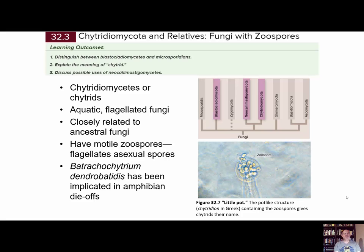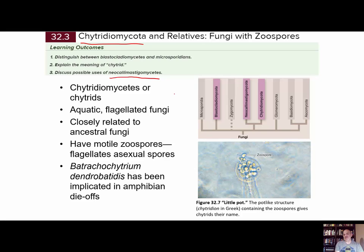Section three covers the Chytridiomycota. A couple of other groups have more recently been separated from classification with the chytrids — the Blastocladiomycota and the Neocallimastigomycota — which used to be grouped together with the Chytridiomycota. Evidence suggests they have different ancestries, so they've been placed in separate phyla. We're going to be looking at the chytrids and these two newly formed phyla.